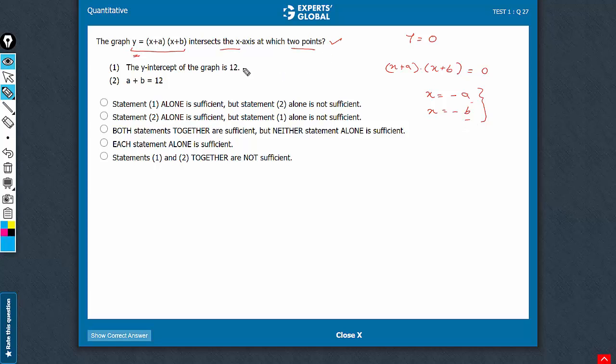Statement 1 tells that the y-intercept of the graph is 12. y-intercept means x equals 0. So when we put x equals 0 in this equation, we get y which is given as 12 here. So 12 is equal to 0 plus a, that is a times 0 plus b, which is b. So we know that a times b is 12.